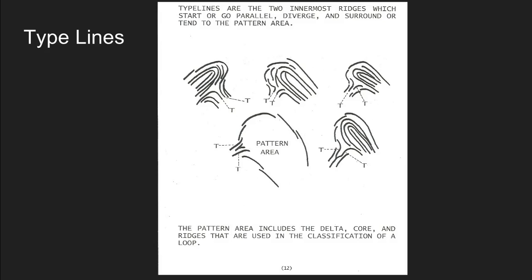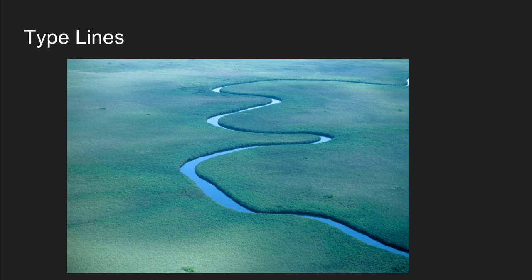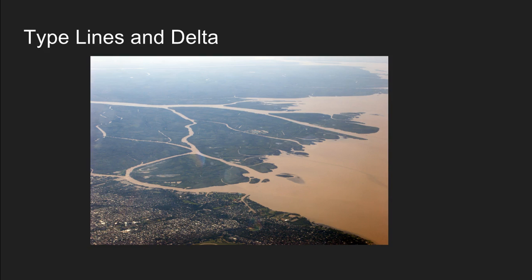The best way to understand what type lines are is to use a metaphor of a river. Type lines are like the banks of a river. If we look at a river as it flows and meanders through the landscape, the banks of the river for the most part run parallel to each other — they're the same distance apart. As one turns left so does the other.